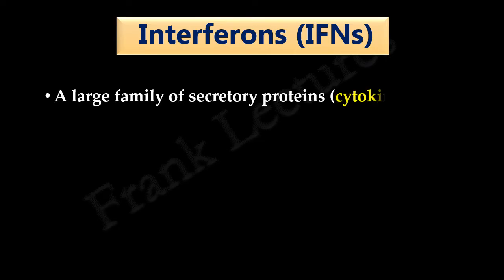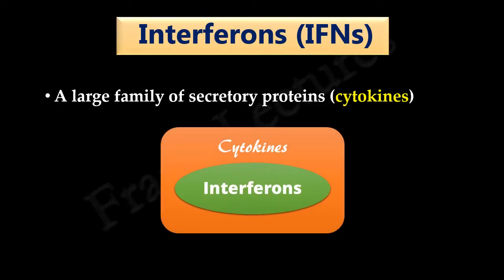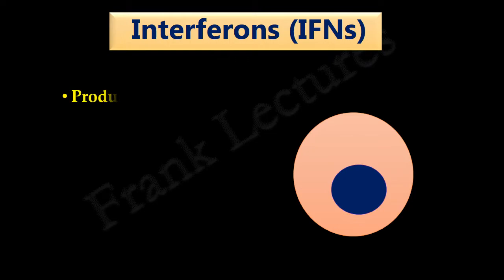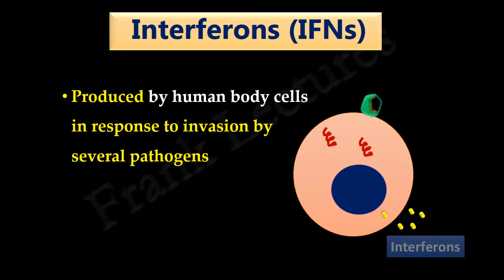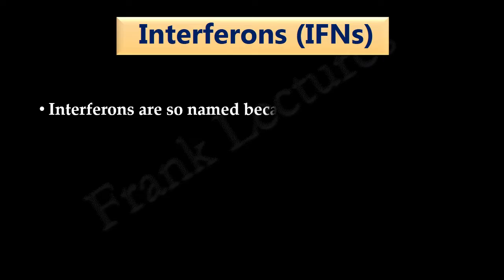If you remember the video lecture on cytokines, we know that interferons are a large family of secretory proteins. They are a type of cytokines, meaning they are cell signaling molecules within our immune system. Interferons are produced by human body cells in response to invasion by several pathogens — for example, viruses, bacteria, parasites — and they are also produced by tumor or cancer cells. The name 'interferon' reflects their ability to interfere with viral replication.